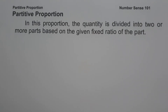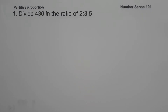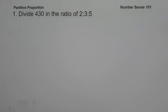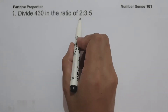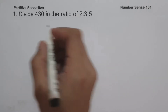Let's start and have an example. On the first example, divide 430 in the ratio of 2 is to 3 is to 5. To divide 430 in the given ratio, let me show you two different solutions. For the first one, since we have the given ratio 2 is to 3 is to 5,